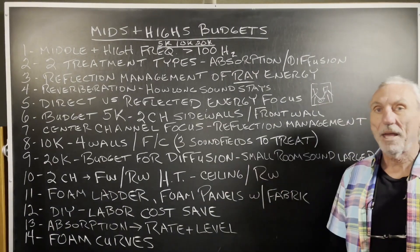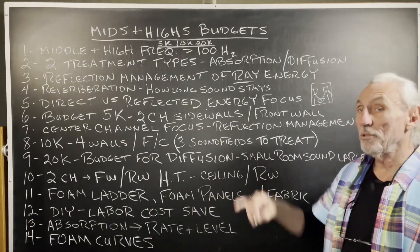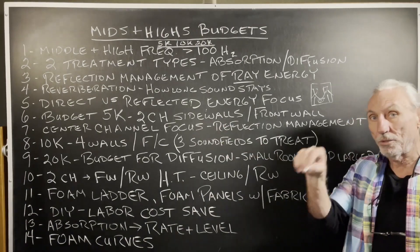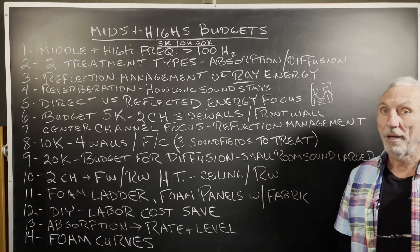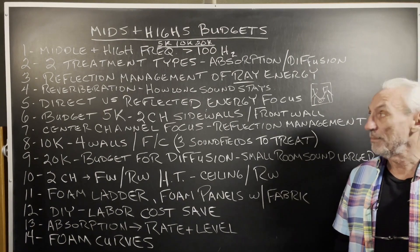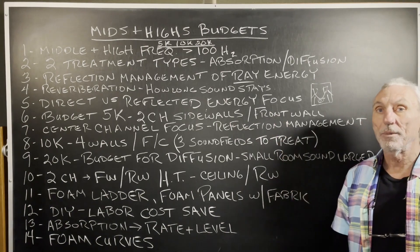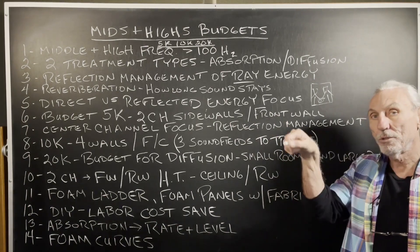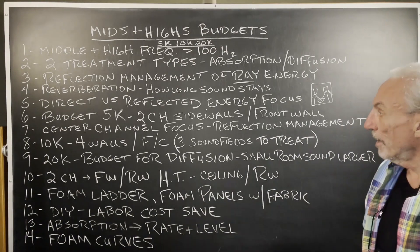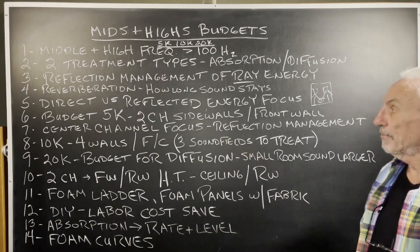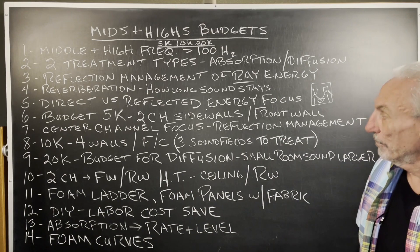So with a 5k budget, let's look at two-channel. We're going to definitely do the sidewalls and the front wall, because those three surface areas are the most critical. The front wall is obviously most critical for low frequency management, but the sidewalls and the front wall for middle and high frequency management — those three surface areas are critical. So if you're on a more restrictive 5k budget, those are the areas you want to focus on first.